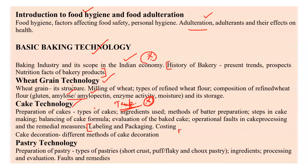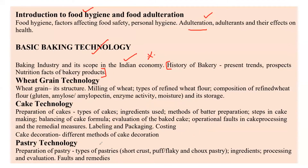Regarding FSSAI labeling regulations, go through them once. For pastry technology, you will mostly get questions related to types of pastry and their fat content — such as which type of pastry is used for a specific product, or whether fermented or unfermented dough is used for a particular food. For example, naan uses fermented dough while chapati does not. Different food product names will be given and you will need to identify the dough type.